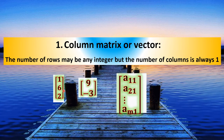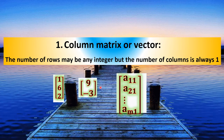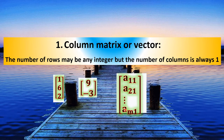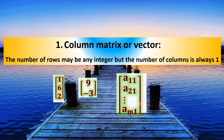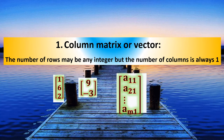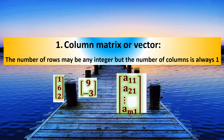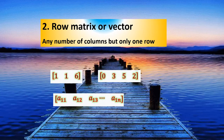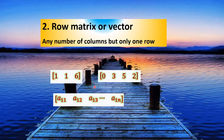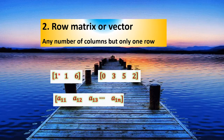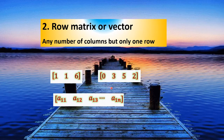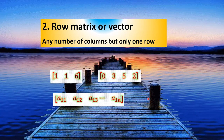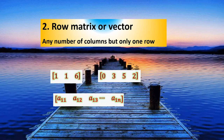This is a 1 column matrix, also called a column vector. This row is a vector. This row is a column matrix.